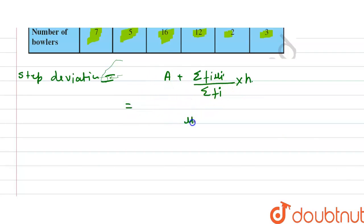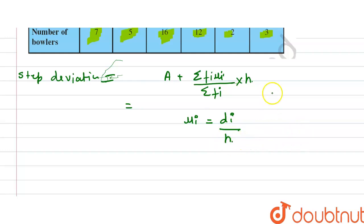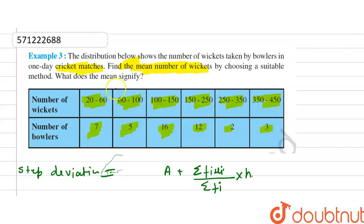ui is equal to deviation divided by h. This is how we find ui. h is the length of the class interval — here, for 20 to 60, the length is 60 minus 20, which equals 40. So h is 40.